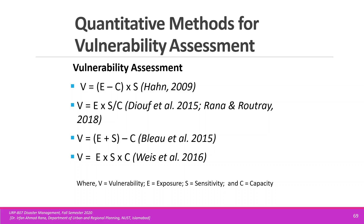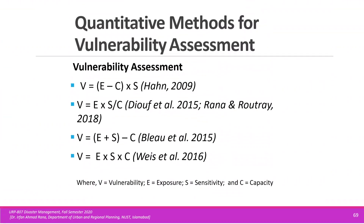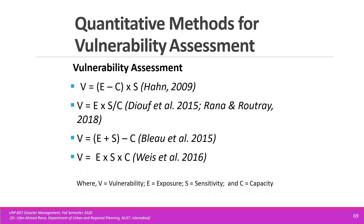Depending on the formula you use, your vulnerability values might vary. In one key formula, V equals exposure multiplied by sensitivity multiplied by lack of capacity — where lack of capacity is the counteracting part of vulnerability.